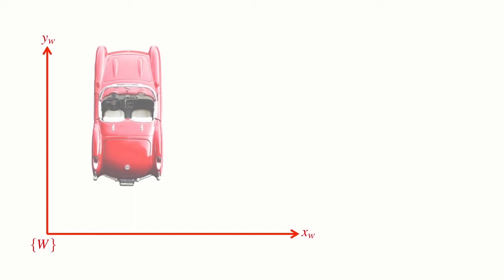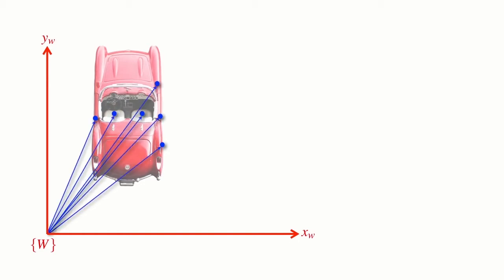It's very clear that this is the X axis of the W frame and the Y axis of the W frame. Now let's indicate some points of interest on this car: the left seat, the right seat, one of the mirrors, door handles, and perhaps where we refuel it. I can describe each of these points by a vector with respect to the world coordinate frame.